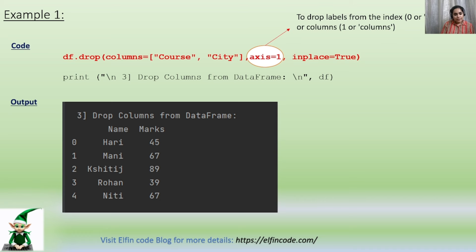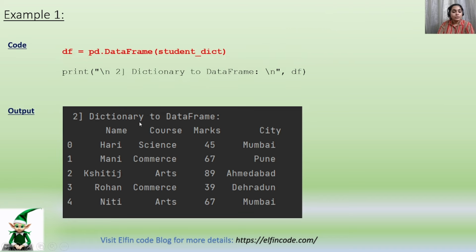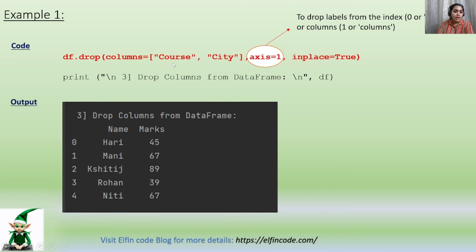Now let us say we have to drop specific columns from this DataFrame. For that, we have the syntax df.drop(). Inside df.drop(), you can specify the list of columns which we want to drop — so columns equals Course and City. If we look at our input DataFrame, we have Name, Course, Mark, and City — four columns. So when writing Course and City in the drop method, both of these columns are deleted from the DataFrame.